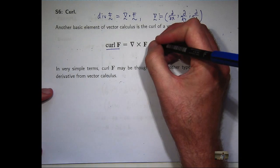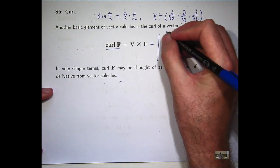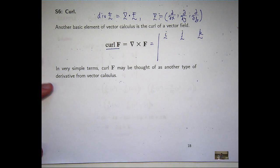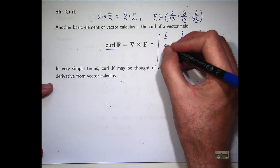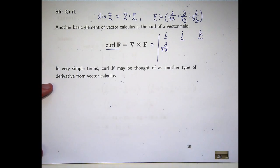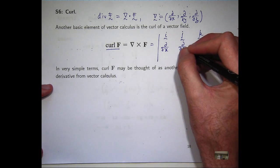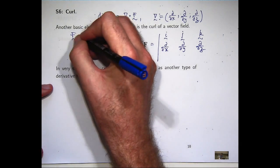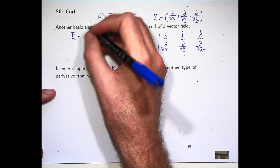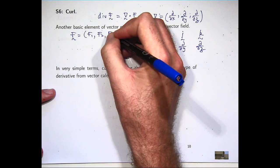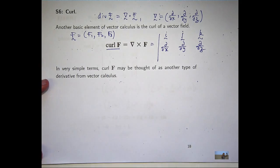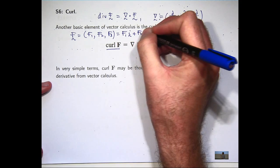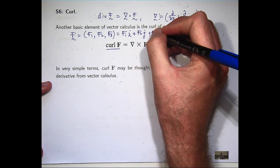Remember that a cross product can be computed through a special determinant. Now, the del operator, it's not really a vector, it's called a symbolic vector, but we can write it as a vector here. And, let's say, f has components f1, f2, and f3, where f1, f2, and f3 are all functions of three variables.